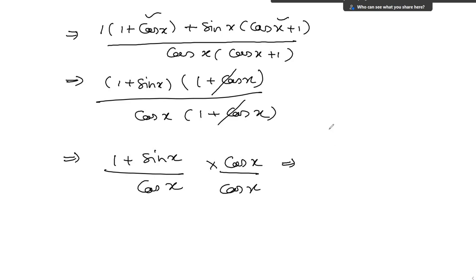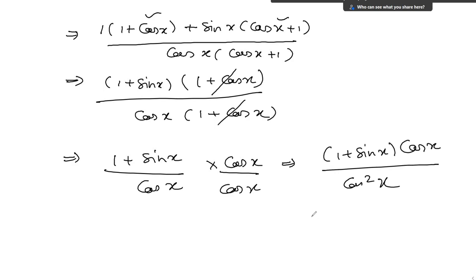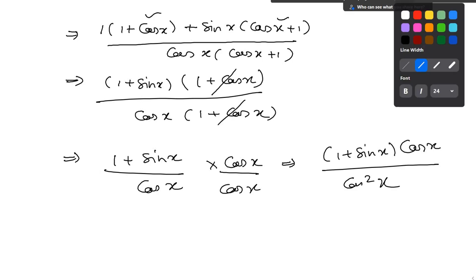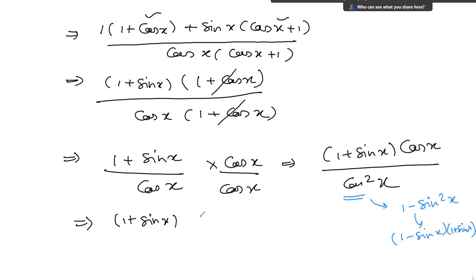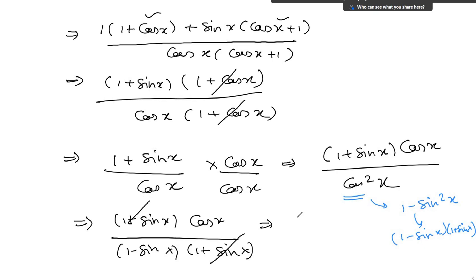So I am just multiplying cos x in the numerator and denominator. It is equal to 1 plus sin x times cos x divided by cos squared x. We know that cos squared x equals 1 minus sin squared x. So I am just writing 1 minus sin squared x as 1 plus sin x times 1 minus sin x. So we have 1 plus sin x times cos x, divided by 1 minus sin x times 1 plus sin x. So 1 plus sin x and 1 plus sin x cancel out.